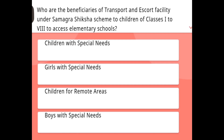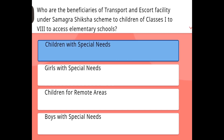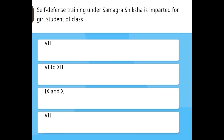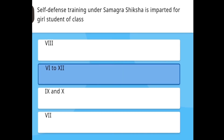Who are the beneficiaries of the transport and escort facility under Samagra Shiksha for children of classes 1 to 8 to access elementary schools? The answer is children with special needs. Self-defense training under Samagra Shiksha is imparted for girl students of class 6 to 11.